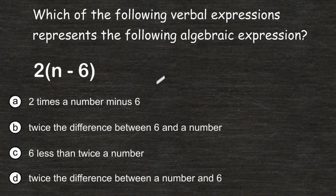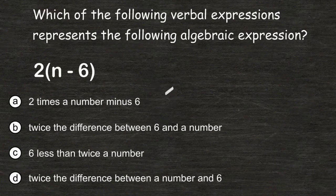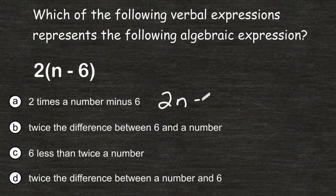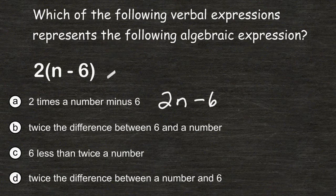Choice A reads that we have 2 times a number minus 6, and we would write that as 2 times a number, or 2n minus 6. Now if we compare this to the given algebraic expression, at a glance they look similar but they are actually different.